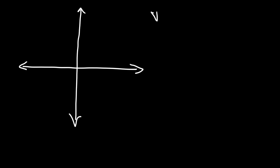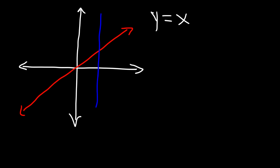In this video we're going to talk about how to tell if a graph represents a function using the vertical line test. Let's start with a linear function y equals x — this function looks like a straight line. If we draw a vertical line, notice that the function touches the vertical line only at one point, so that means this graph is a function.